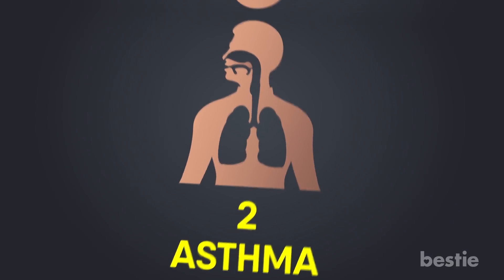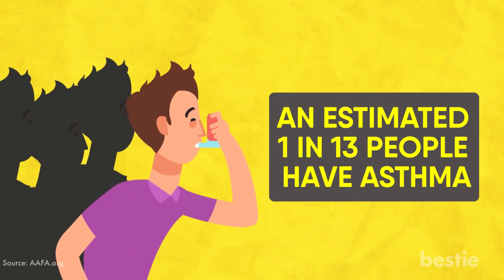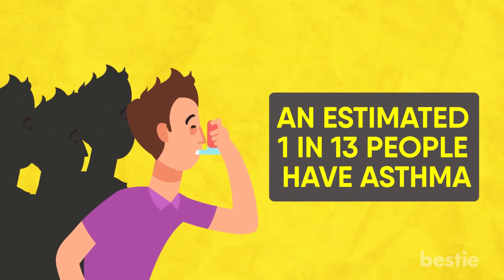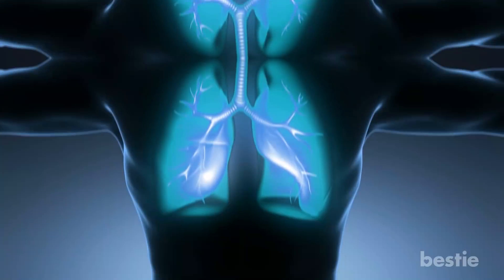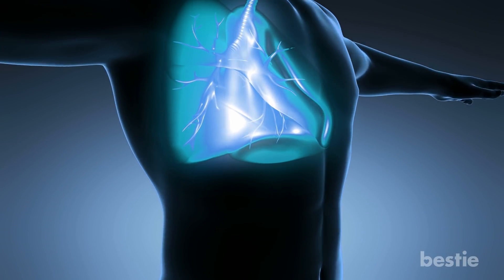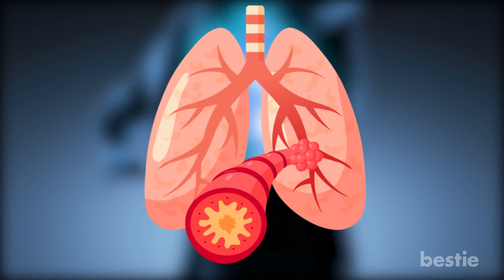Asthma is linked to acute respiratory infections. If you suffer from this breathing condition, you need to watch out. An estimated 1 in 13 people have asthma, and there is no cure. When your asthma acts up, it can trigger an upper respiratory infection. It hurts the lungs, causing inflammation, and this results in your airway becoming freakishly narrow.